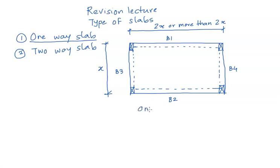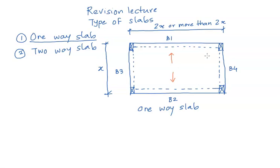When such a condition exists, this type of slab is called a one-way slab. It is called a one-way slab because the load on the slab gets transferred to only beams B1 and B2. The load acts only in the shorter direction, and hence the reinforcement is also going to be along the shorter direction.